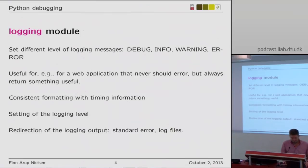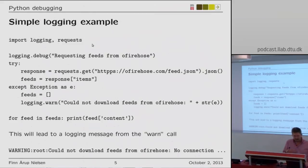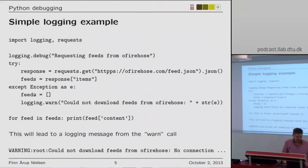Depending on which kind of module it's arising from, a simple logging example is shown here. It imports the logging module and uses a requests call to download something from a firehose web service. First it issues a debug message, then tries to download some information and put it into a dictionary. There's a list of dictionaries with feeds from the firehose. If there's an error, an exception outputs a warning that it could not download feeds from firehose.